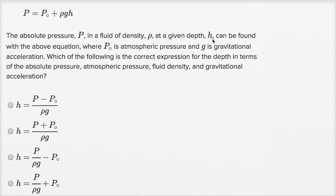at a given depth h can be found with the above equation where capital P with a little subscript, P sub zero—or maybe it's just an O, but it looks like a zero—P sub zero is atmospheric pressure, and g is gravitational acceleration.